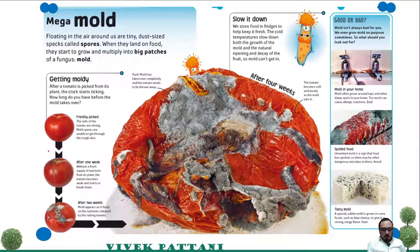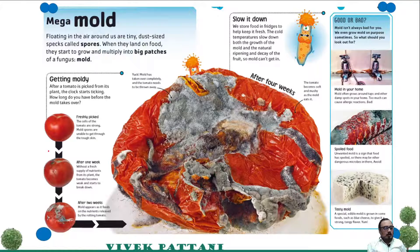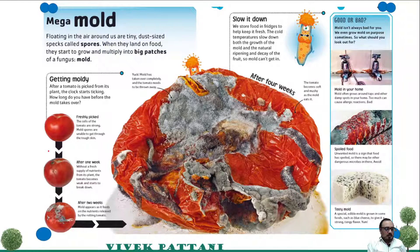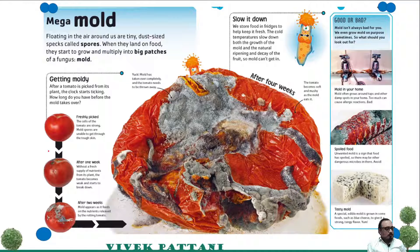Mold is the multicellular form of fungi. It may be in the form of puffballs, mushrooms, or just filamentous structures. Floating in the air around us are basically tiny dust-sized particles called spores. When they land on food they start to grow and multiply into big patches of fungi, generally known as mold. In our environment we already have a load of various fungal spores.